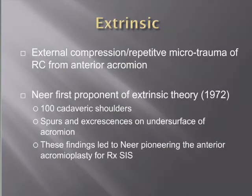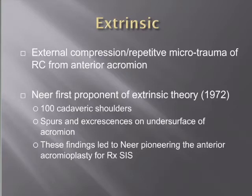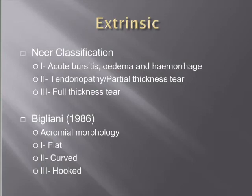Neer looked at a hundred cadaveric shoulders and found spurs and excrescences on the underside of the acromion, deducing this was the main etiology in rotator cuff pathology. These findings led to development of the anterior acromioplasty for treatment of subacromial impingement syndrome. He also classified rotator cuff dysfunction: Type 1 is acute bursitis with edema and hemorrhage in patients under 25; Type 2 is tendinopathy with partial thickness tear, ages 25-40; Type 3 is full thickness tears in patients over 40.